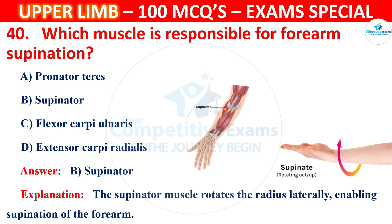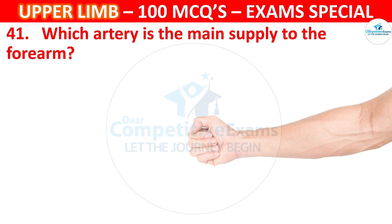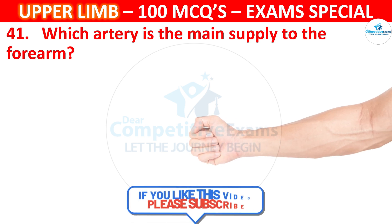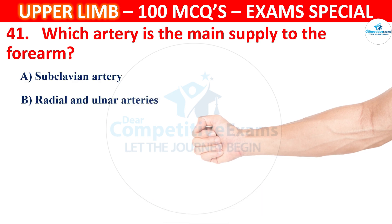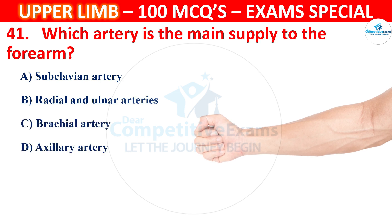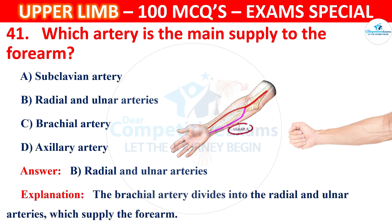Question number 41: Which artery is the main supply to the forearm? Options: subclavian artery, radial and ulnar arteries, brachial artery, or axillary artery. The correct answer is B, radial and ulnar arteries. The brachial artery divides into the radial and ulnar arteries, which supply the forearm.